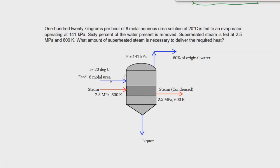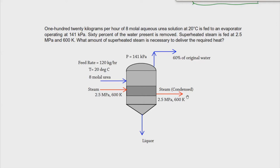The feed rate is 120 kilograms per hour, the temperature is 20 degrees Celsius, and that's 8 molar urea. Steam enters at the gas phase and is condensed — we assume that's the ideal condition for this evaporation. The system pressure is 141 kilopascal, and 60% of the original water is removed as the process progresses.